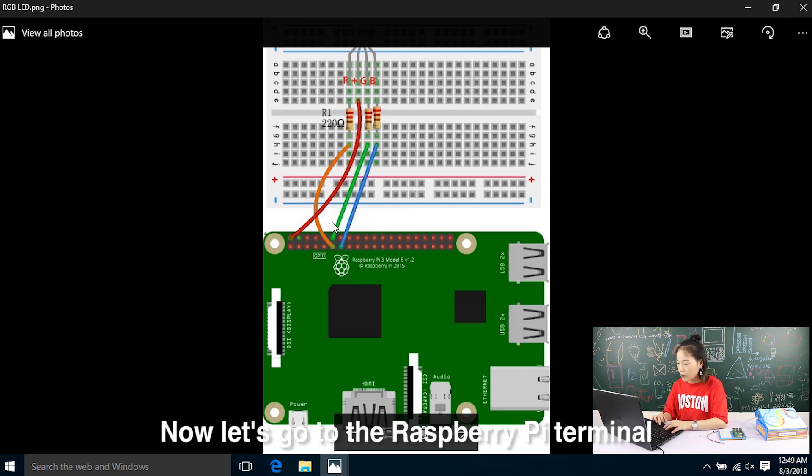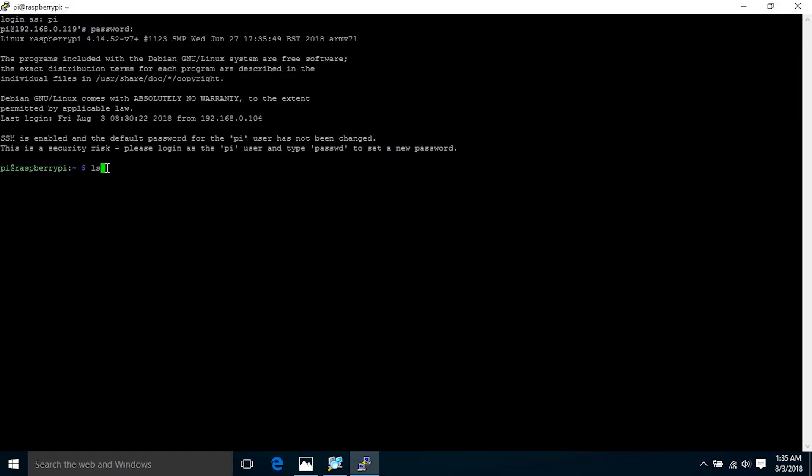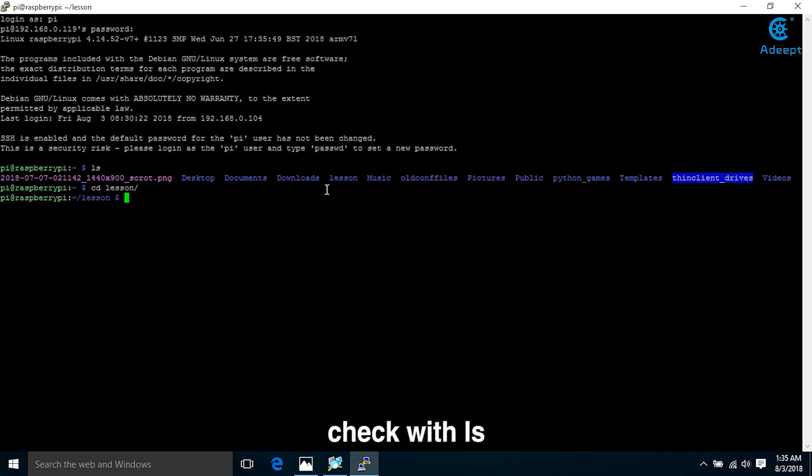Now let's go to Raspberry Pi terminal. First, let's check the current directory. Then enter the lesson. Check with ls. Now we can see the RGB.c program in the directory. It has been written before. Now open this folder.